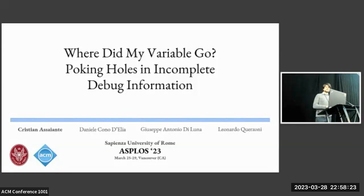Good afternoon to everyone. I'm Christian Assante, a PhD student at Sapienza University of Rome. This is 'Where Did My Variable Go: Poking Holes in Incomplete Debug Information.' In this presentation, I'm going to introduce a practical and effective approach for finding completeness bugs in optimizing compiler tool chains.